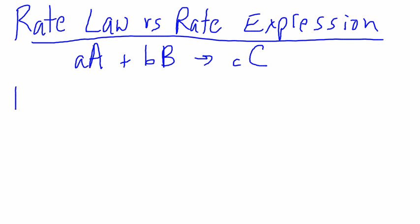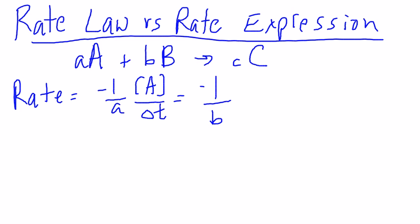We can write the rate expression: rate is equal to minus 1 over lowercase a times the change in A's concentration over time. We could also follow the disappearance of B, its concentration over time, or we could also follow the appearance of C's concentration over time.